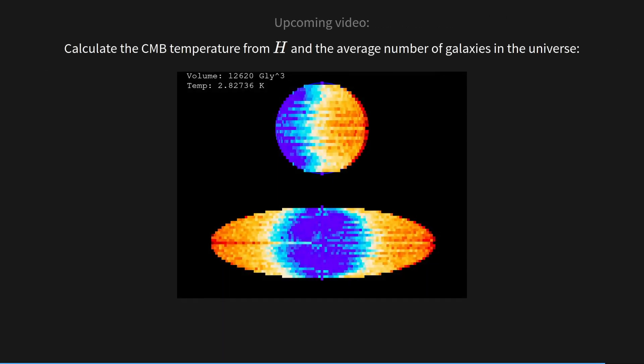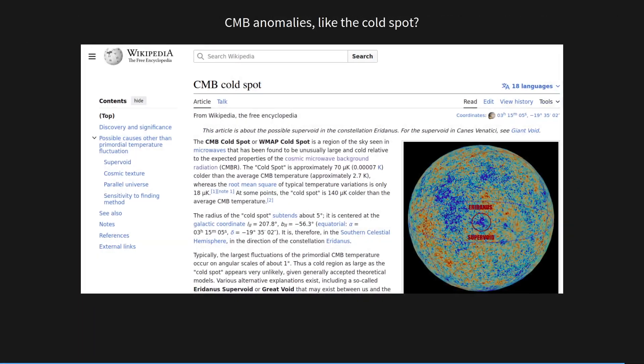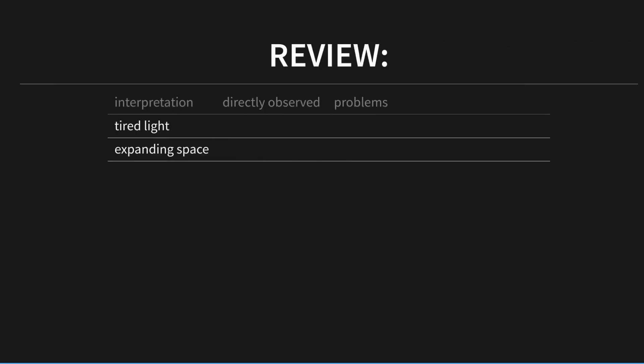We can also use the temperature of the CMB in H to calculate the average number of galaxies in the universe. This shouldn't be a problem, but it needs some work, and I'll tell you all about it in an upcoming video. The CMB has anomalies like this cold spot, and while this also needs some work, I think I can show that that makes total sense in this hypothesis.